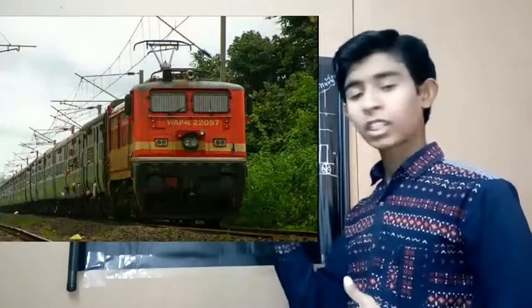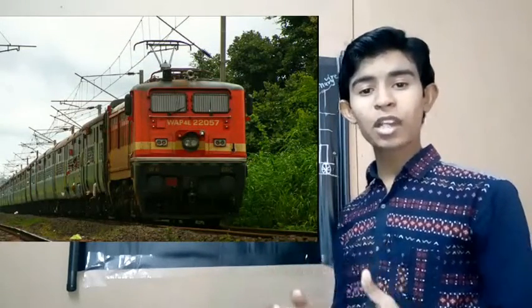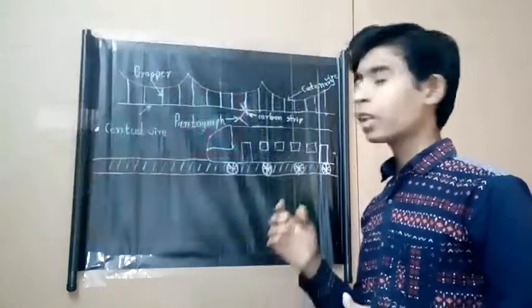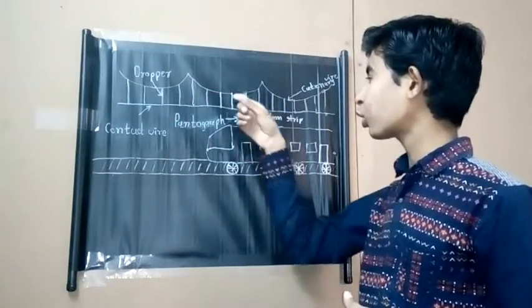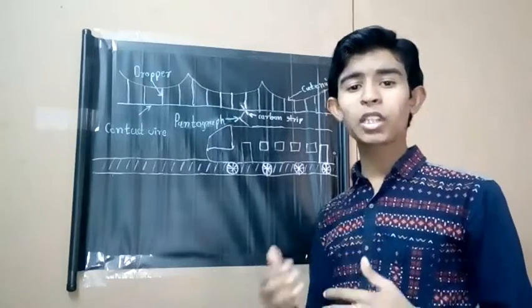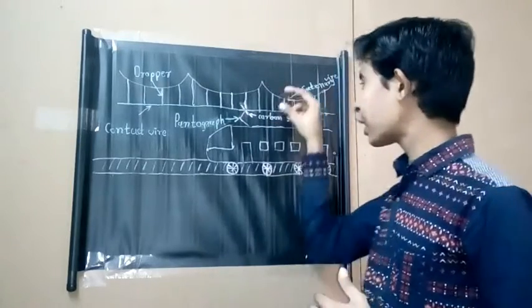Because when the locomotive is connected with the contact wire, then electricity starts to transfer into the locomotive. In this figure, you can see the thing between catenary wire and contact wire. It's called droppers. Droppers are found in different lengths depending on the gap between the two wires.